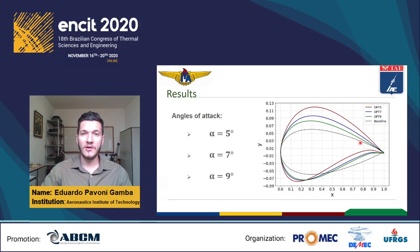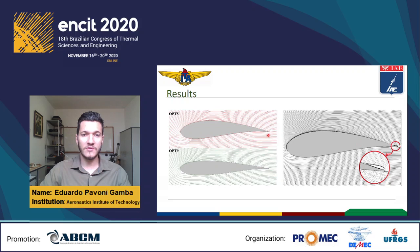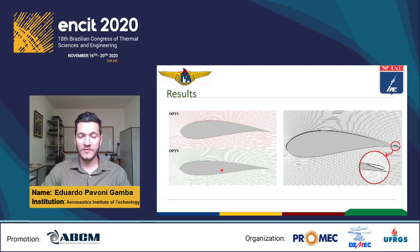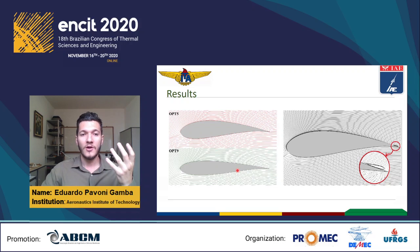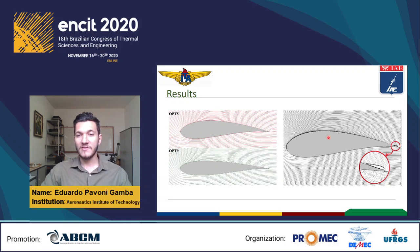To understand why this happened, we need to investigate it aerodynamically. The left picture shows the streamlines around the Opti-5 and Opti-9 geometry. In the Opti-9 case, the flow reaches the airfoil at a point more distant from the leading edge, making the flow more critical in terms of flow attachment. This suggests that if the optimizer had deformed the Opti-9 shape as much as it did for Opti-5, it would have caused stall or flow detachment.